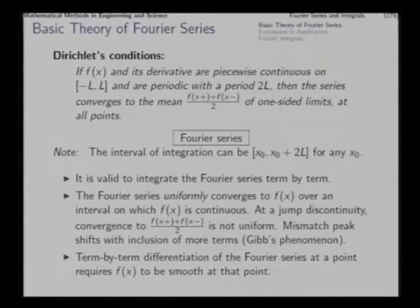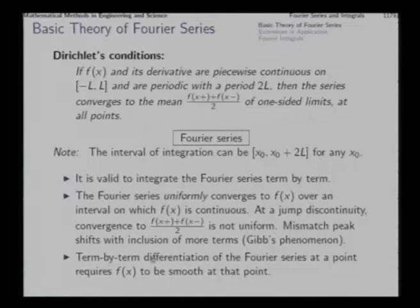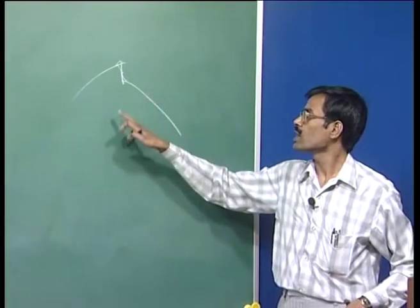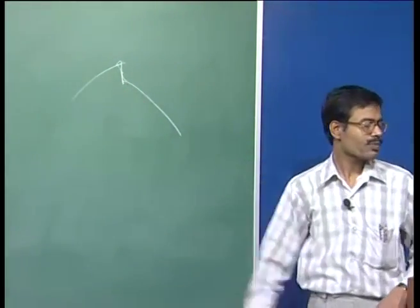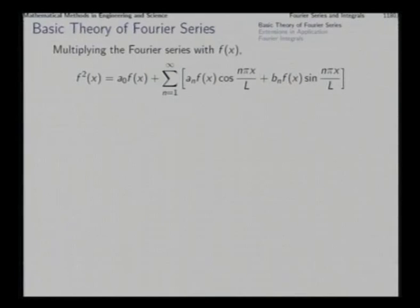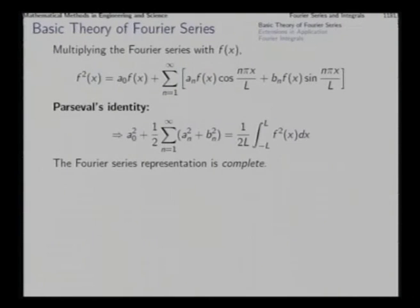What about differentiation? Integration is a smoothing process, but differentiation actually increases discontinuity. Therefore, term-by-term differentiation of a Fourier series is valid only at those points where the function is smooth. The derivative at a point of discontinuity will not be valid.